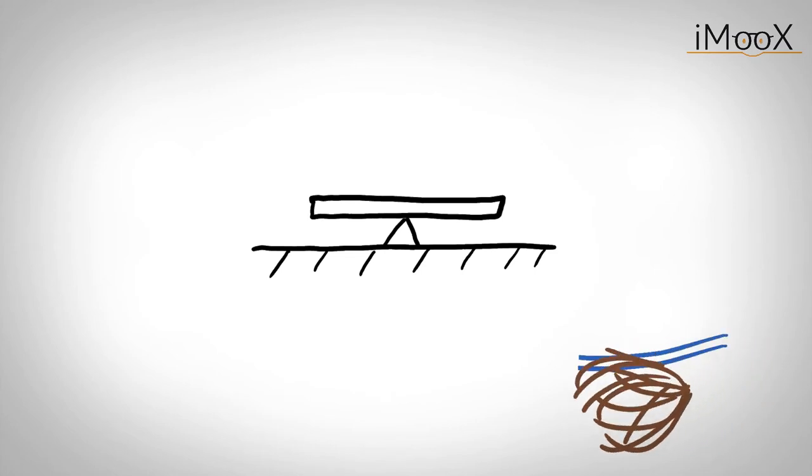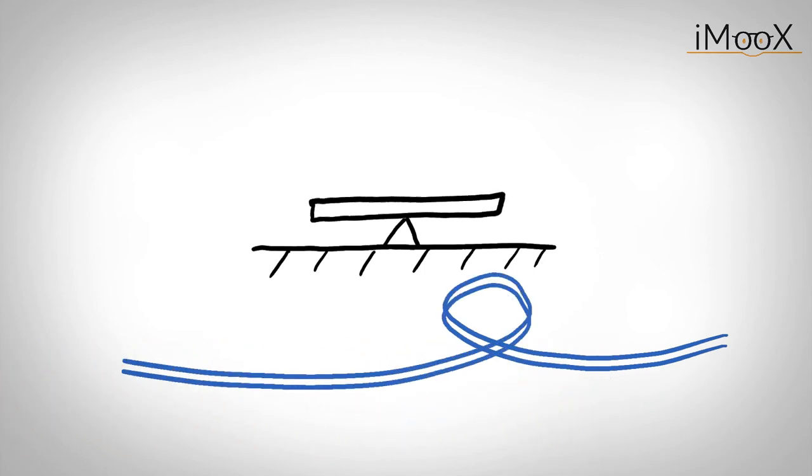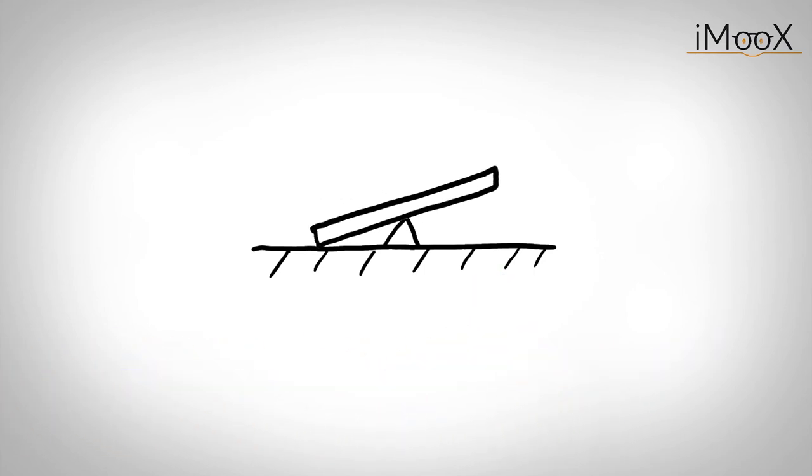You can compare it with a seesaw. A seesaw also has three equilibrium points, whereas the balanced point is instable. As soon as there is a small disturbance, let's say it's windy, the seesaw will fall into one of the other stable equilibrium points.